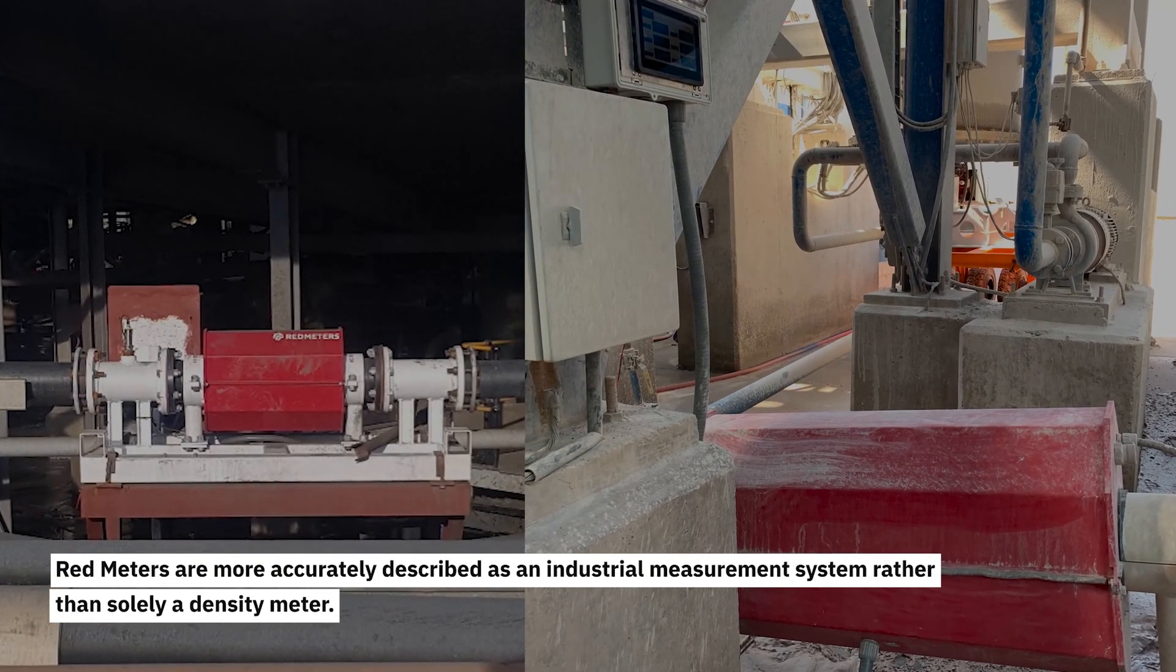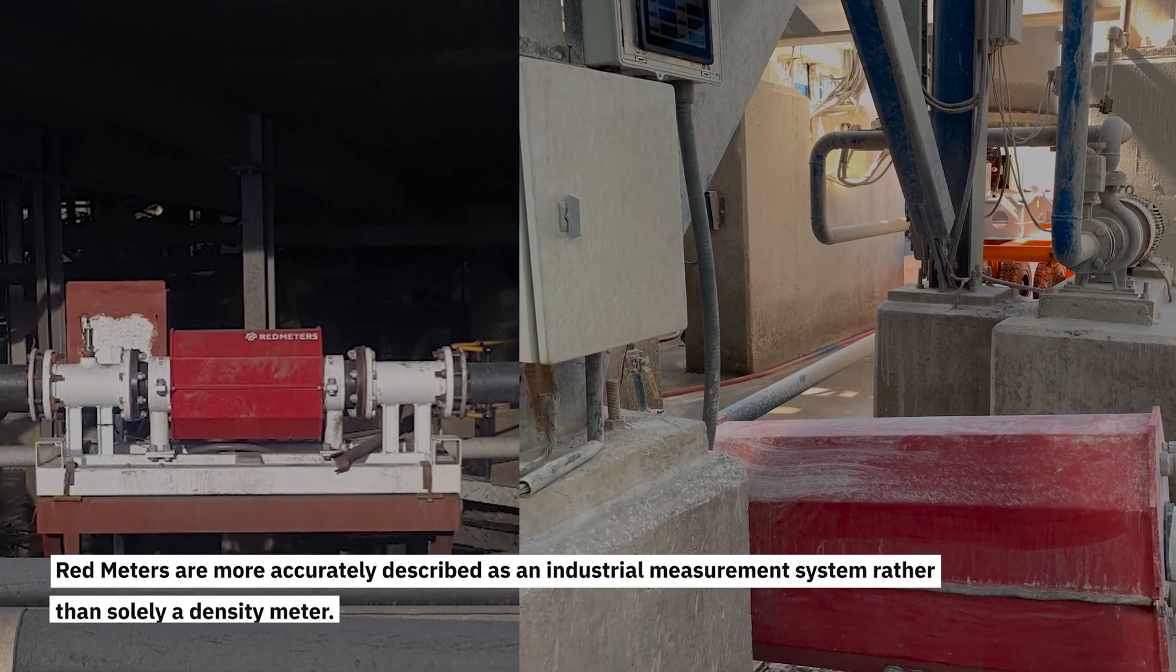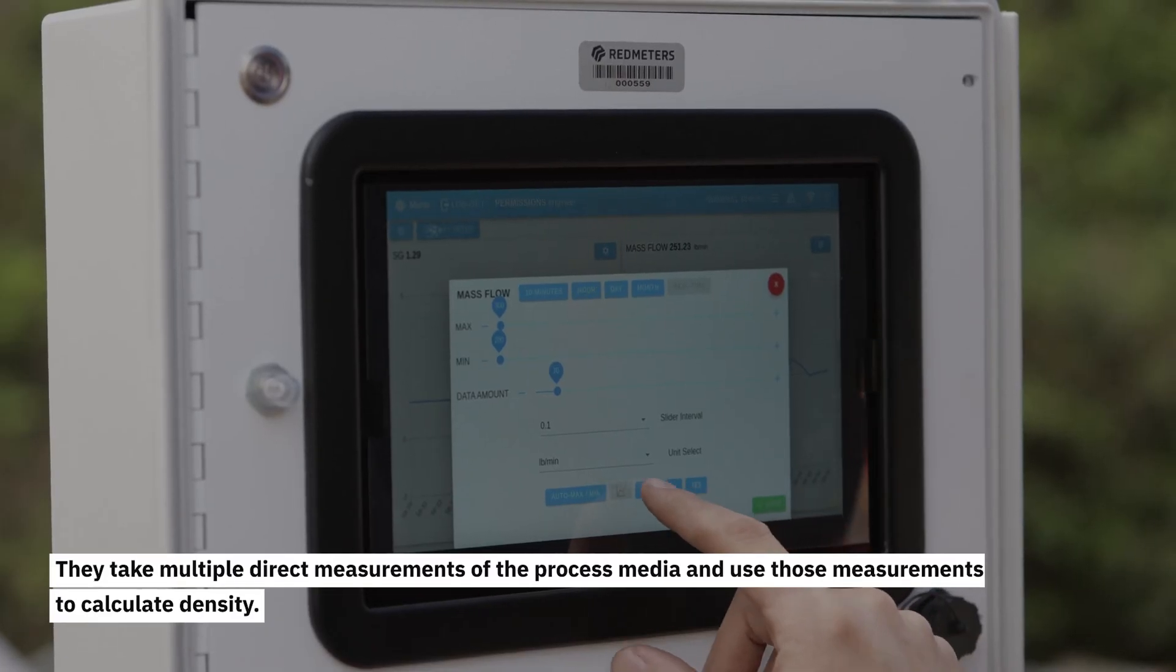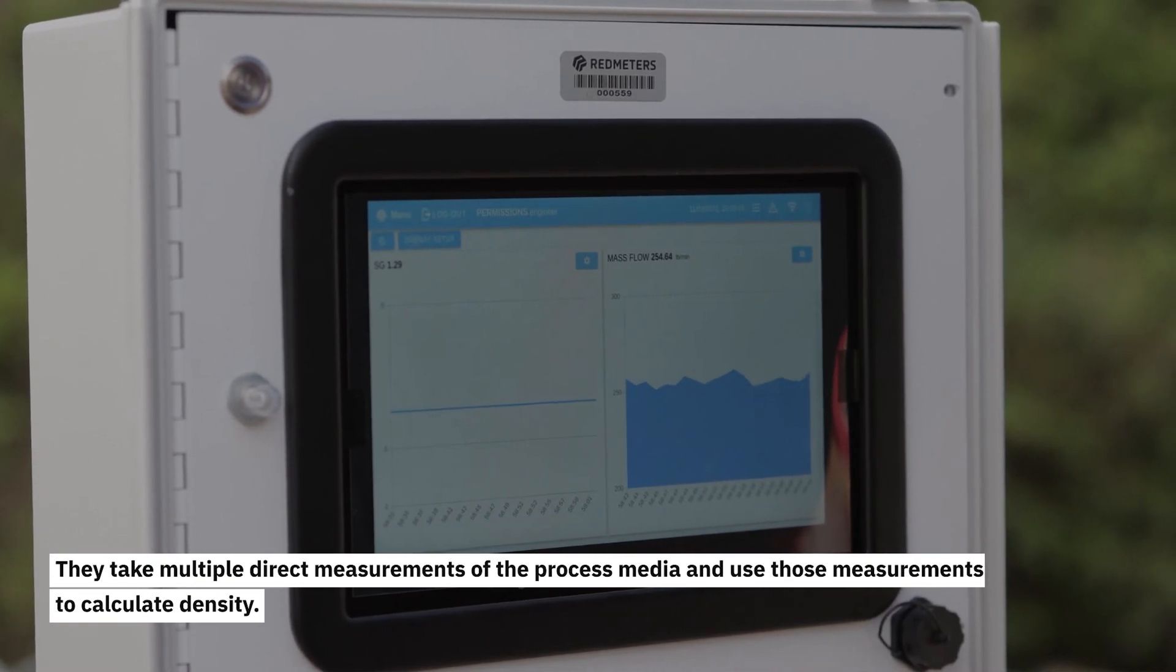Red meters are more accurately described as an industrial measurement system rather than solely a density meter. They take multiple direct measurements of the process media and use those measurements to calculate density.